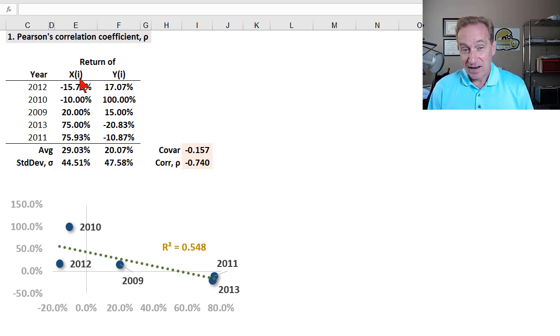So here we have for asset X, its worst return happened to be in 2012 at negative 15.8% approximately, and its best return was the year before that in 2011, almost 76%. In the case of Y, these are neither sorted by the year or worst to best because it's sorted according to X. So in 2012, asset Y returned a little over 17%, and in 2010, it returned 100%. The returns here are plotted on the scatterplot for this small sample, and then I've had Excel draw a regression line for me.